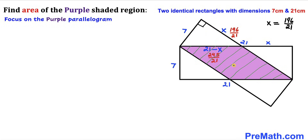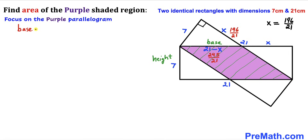Now let's focus on this purple shaded region. We can see it is a parallelogram, since this side is parallel to that side, and this side is parallel to that side. The base of this purple parallelogram is 245 divided by 21 centimeters, and the height of this parallelogram is 7 centimeters.